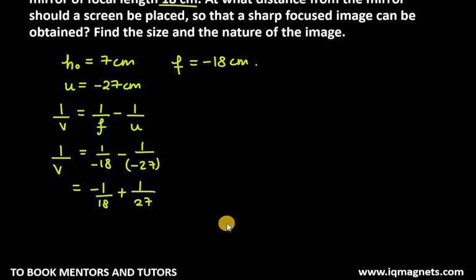So minus 1 over 18 minus minus is plus 1 over 27. Now if you have 27 and 18, if you take LCM, you will get 54. So first term, we have to make 54. So you have to multiply 3 by 3. Second term, you have to multiply 2 by 2. So minus 3 plus 2. It is minus 1 over 54 equals 1 over v.